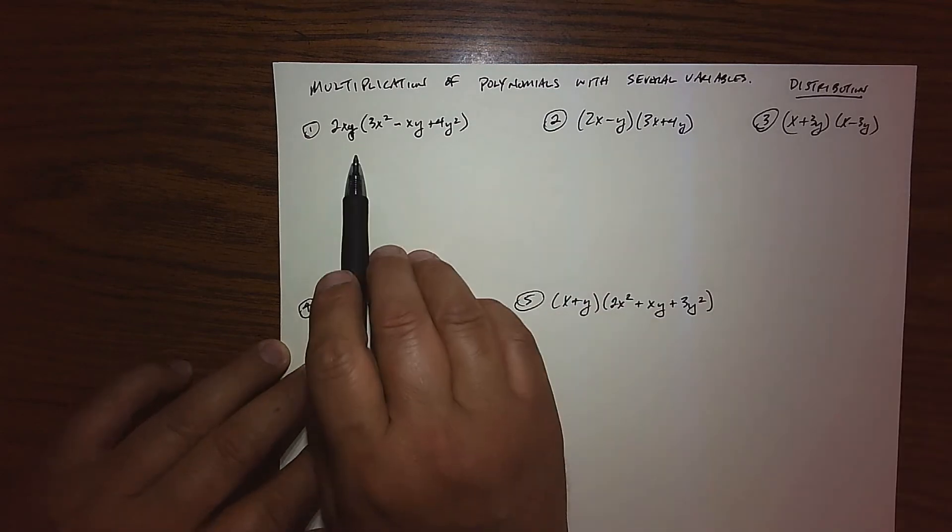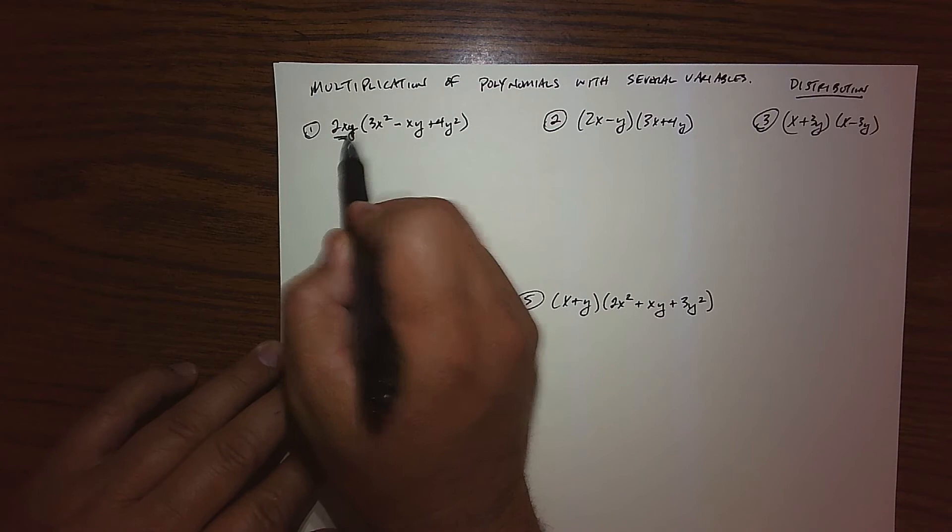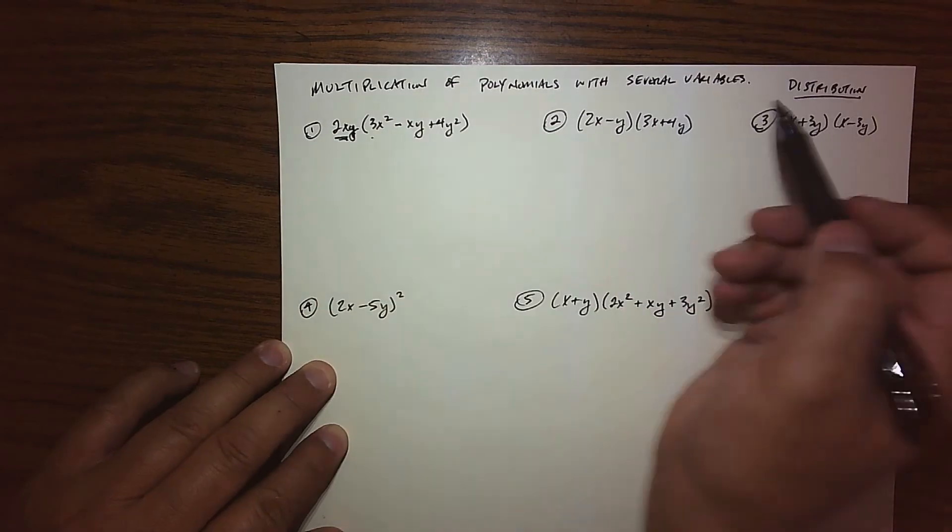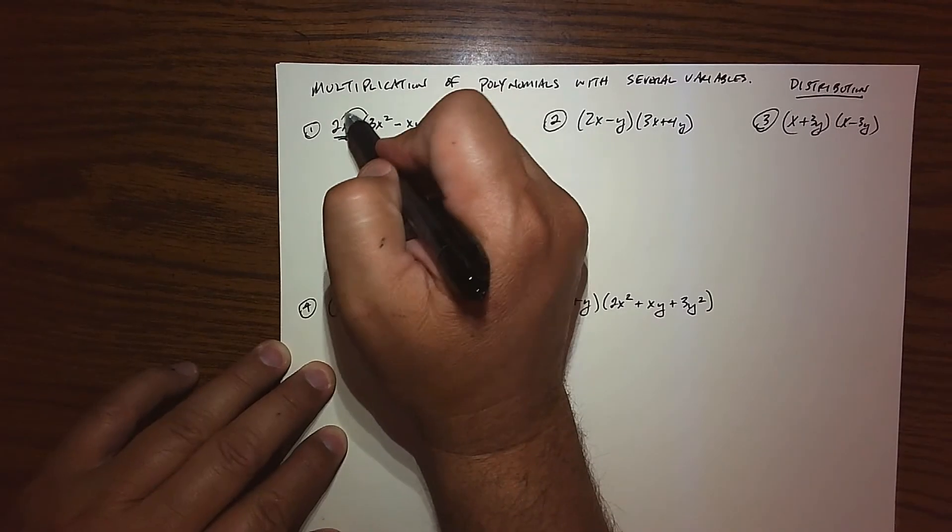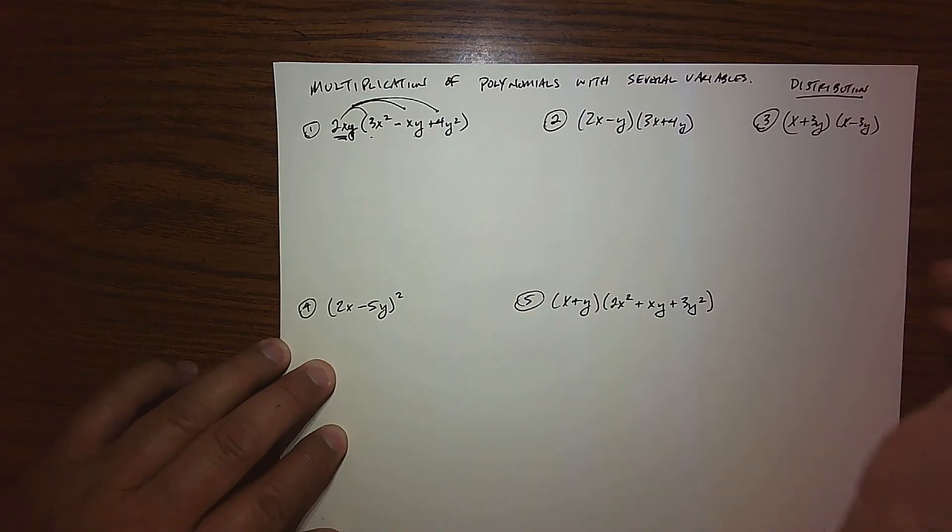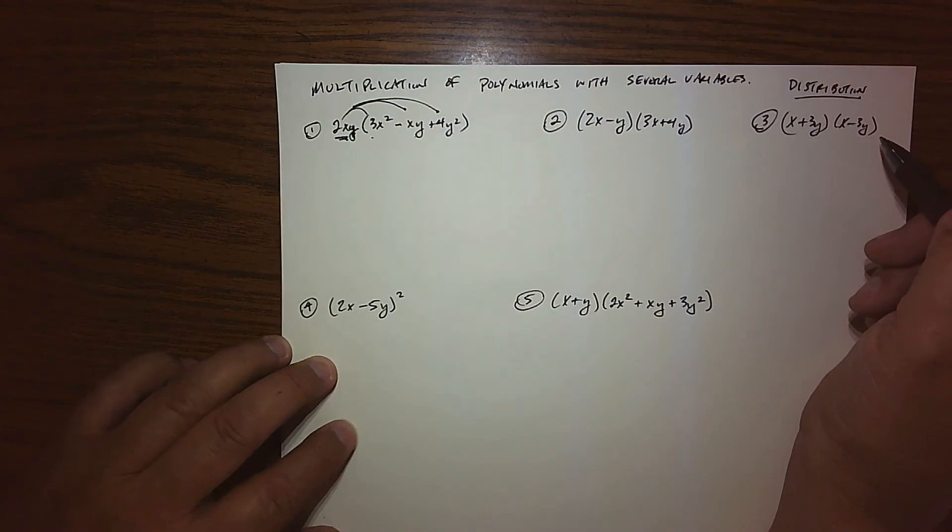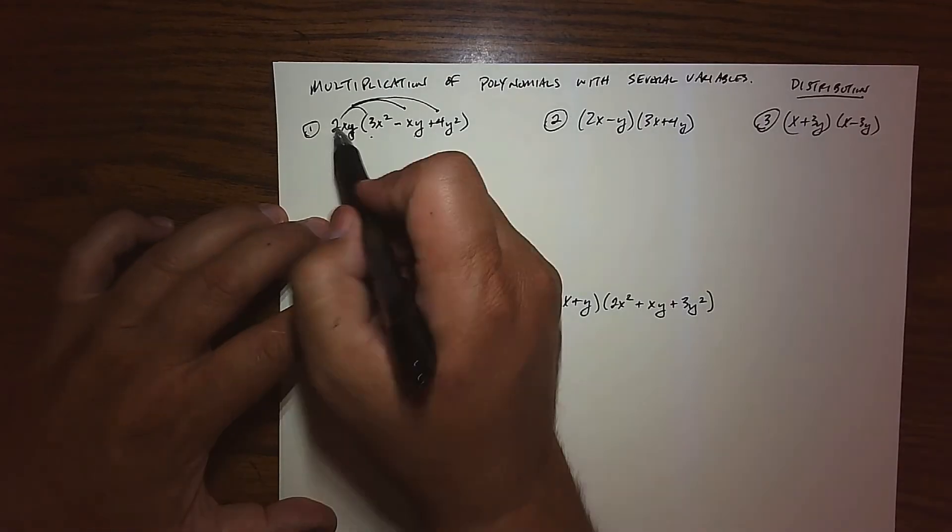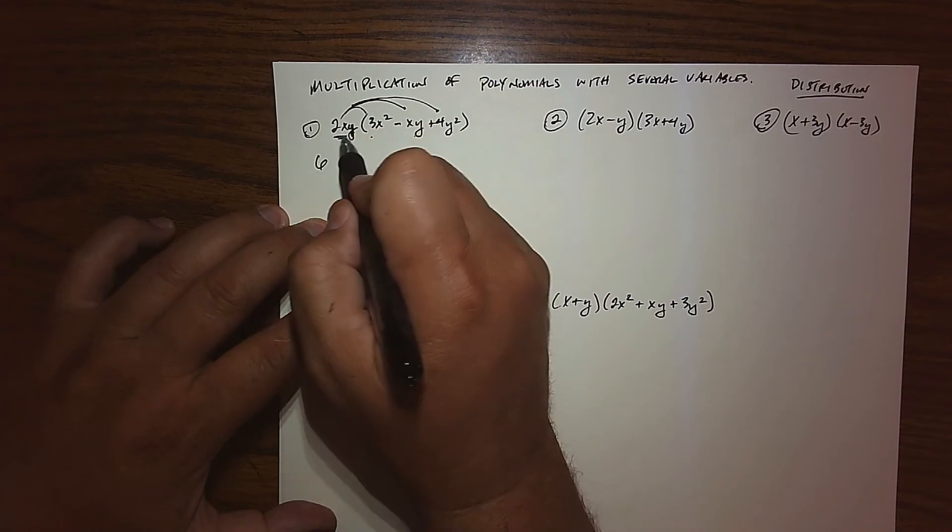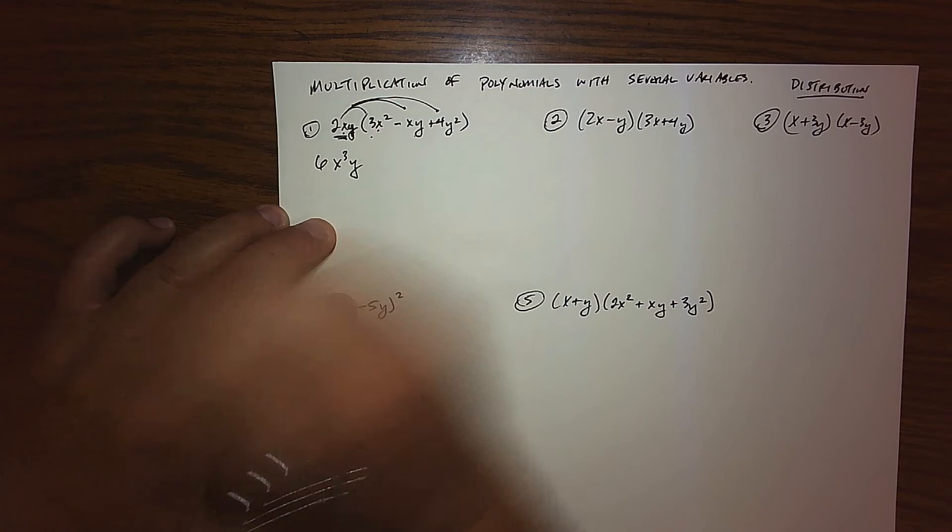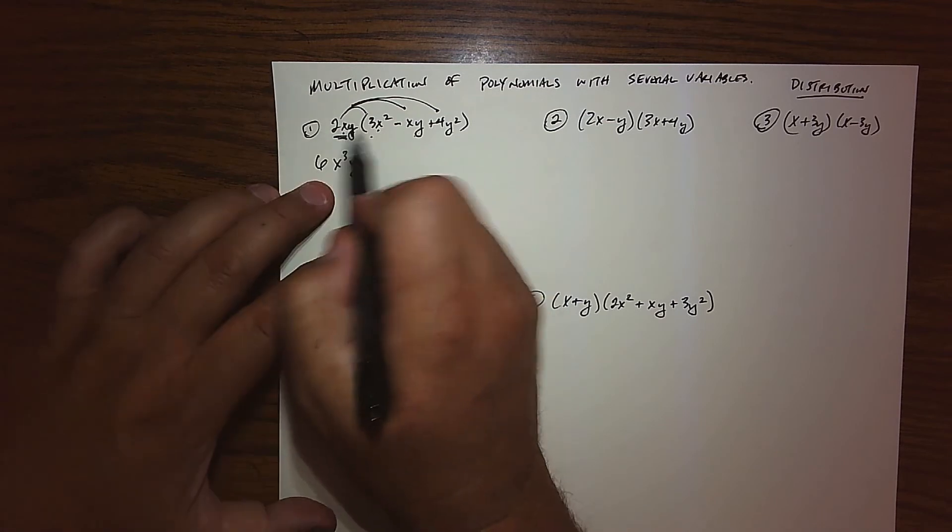Looking at my first example, I'm taking a monomial, 2xy, and I'm multiplying it to a trinomial. So again, distribution-wise, we're basically going to distribute that all the way through. And so 2 times 3 would give us 6. We have an x and an x squared, I have an x cubed, and then we've got a y. So that would be the product of the first two.